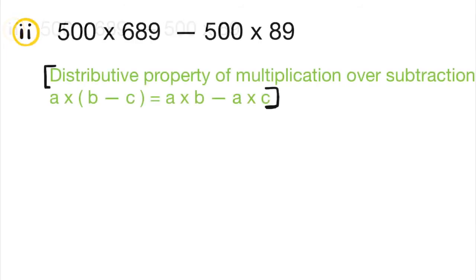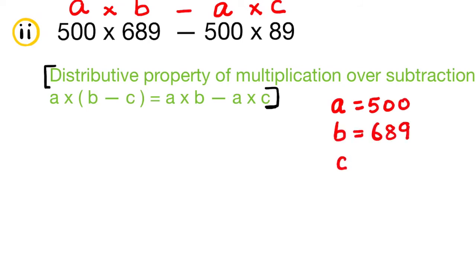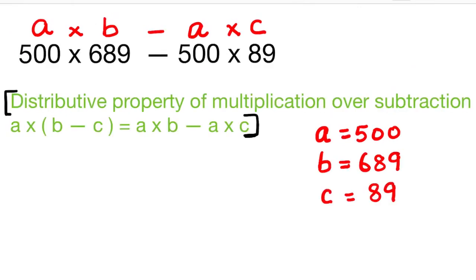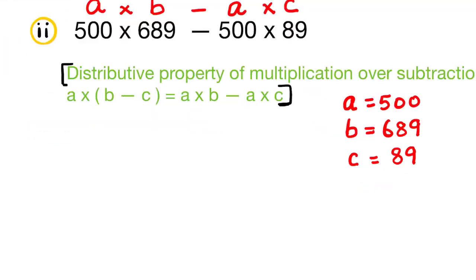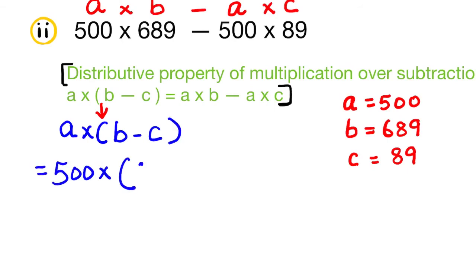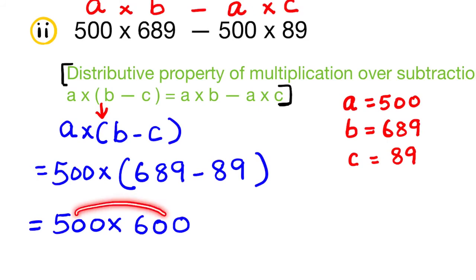Second question: 500 × 689 − 500 × 89. The property used is the distributive property of multiplication over subtraction: a × (b − c) = a × b − a × c. Here a = 500, b = 689, and c = 89. So 500 × 689 − 500 × 89 = 500 × (689 − 89) = 500 × 600 = 300,000.